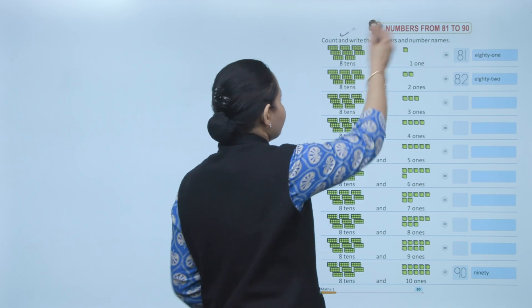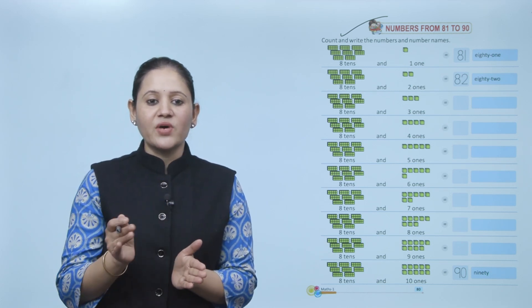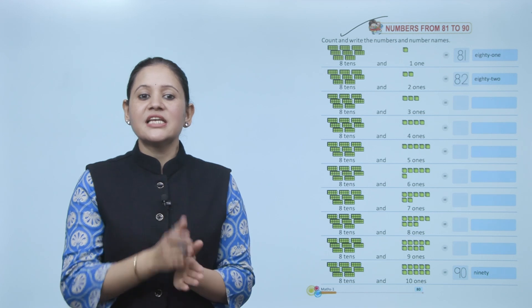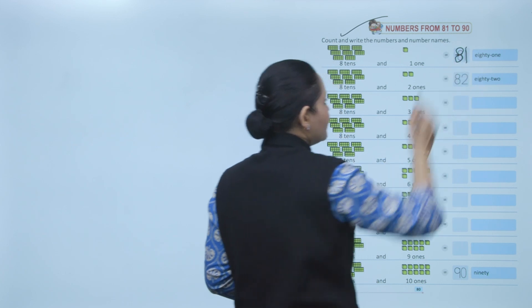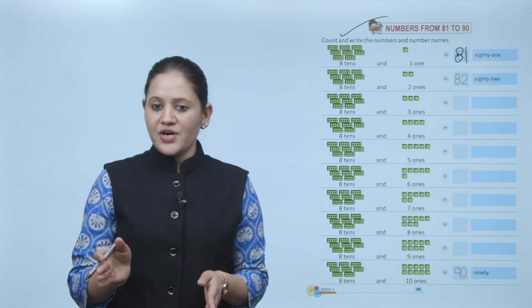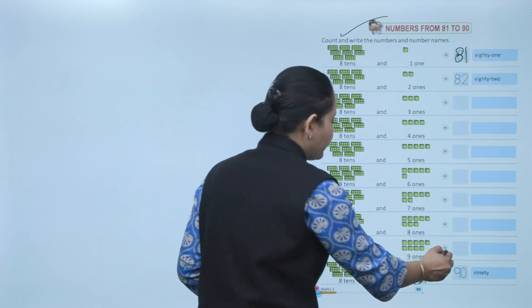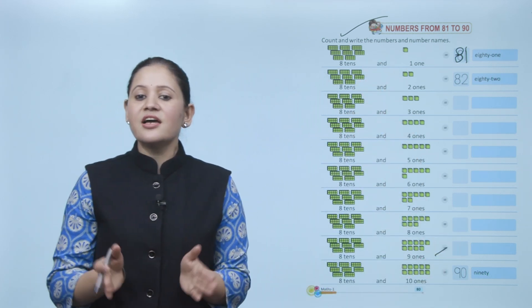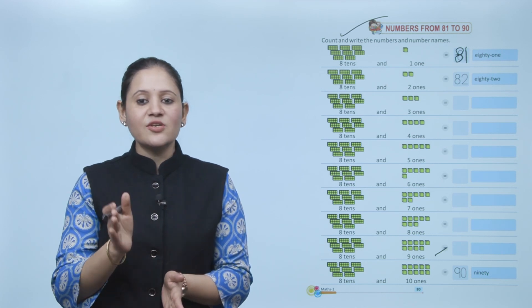Next, numbers from 81 to 90. Count and write the numbers and number names. 81 means 80 plus 1 — 8 tens plus 1 one — that makes number 81. E-I-G-H-T-Y-O-N-E. Like this you can make numbers up to 89. Then comes 90: 9-0. That means 8 tens plus 10 ones — 80 plus 10 equals 90. N-I-N-E-T-Y.